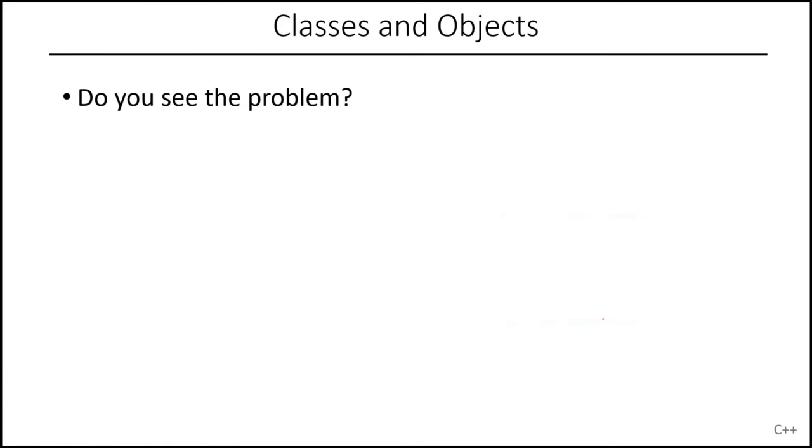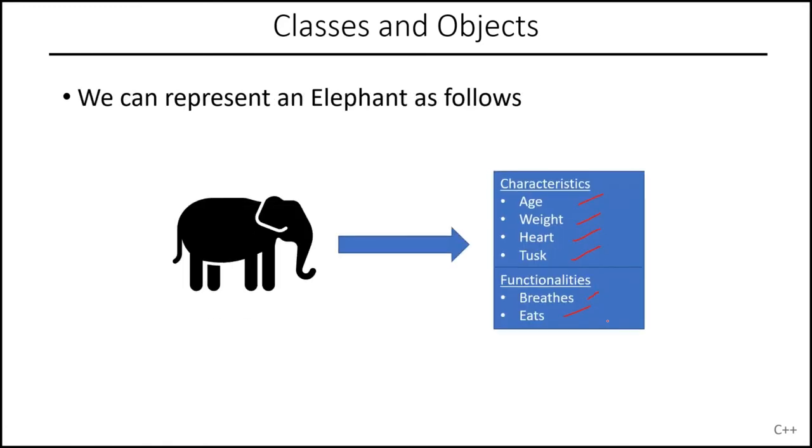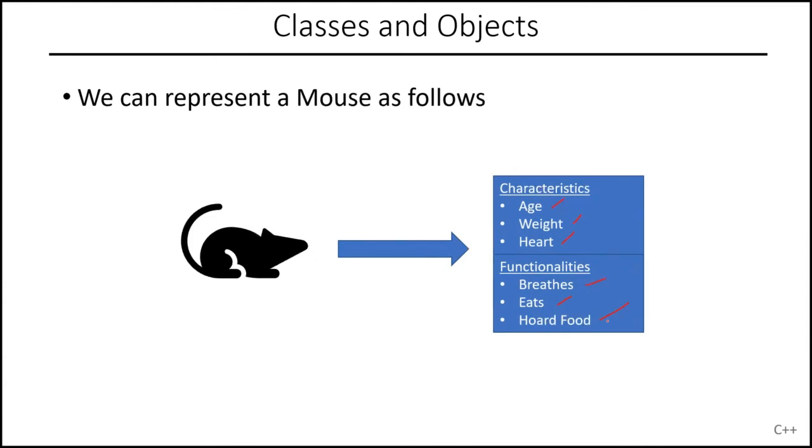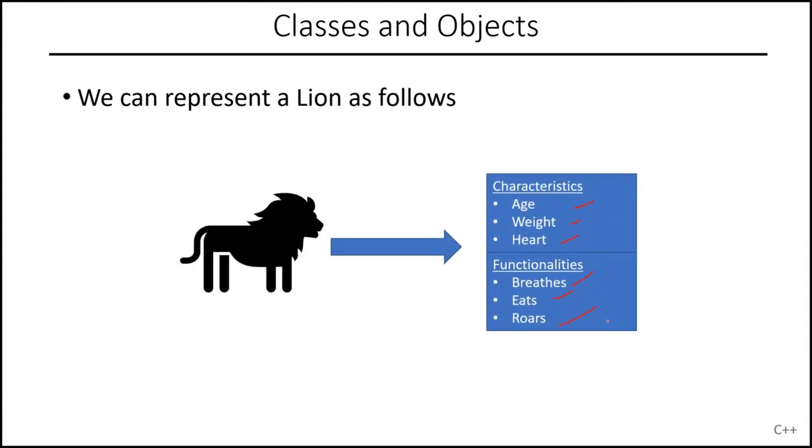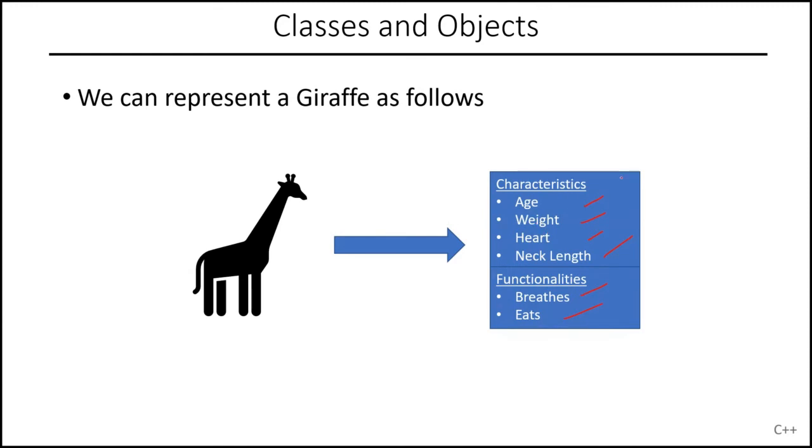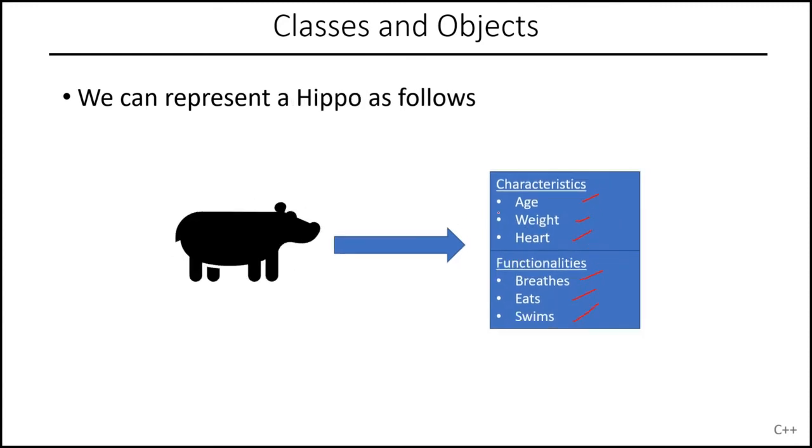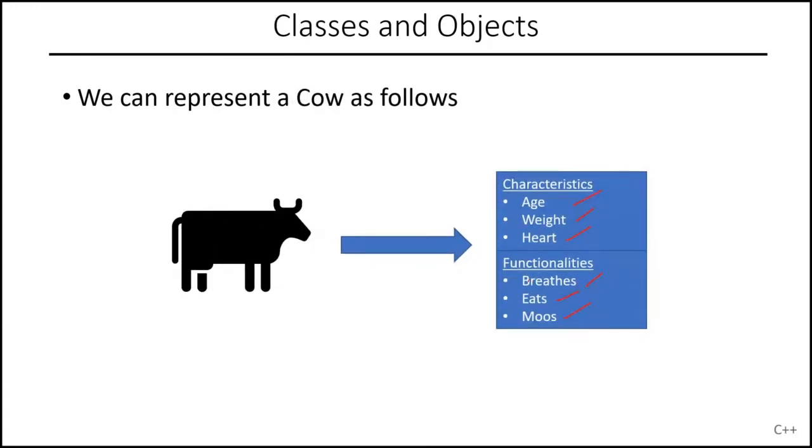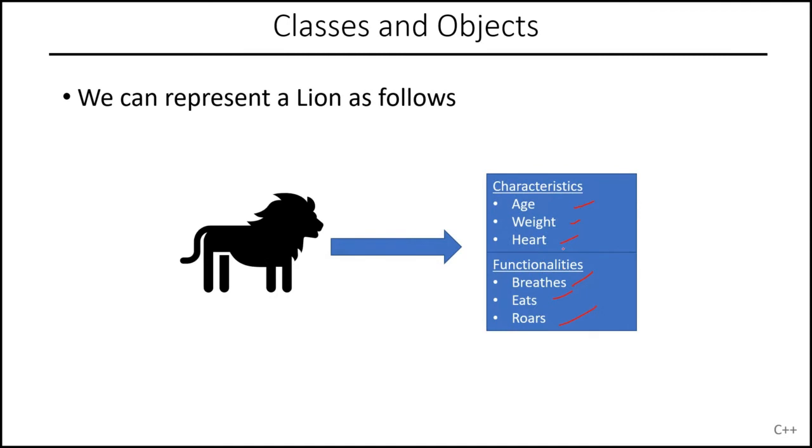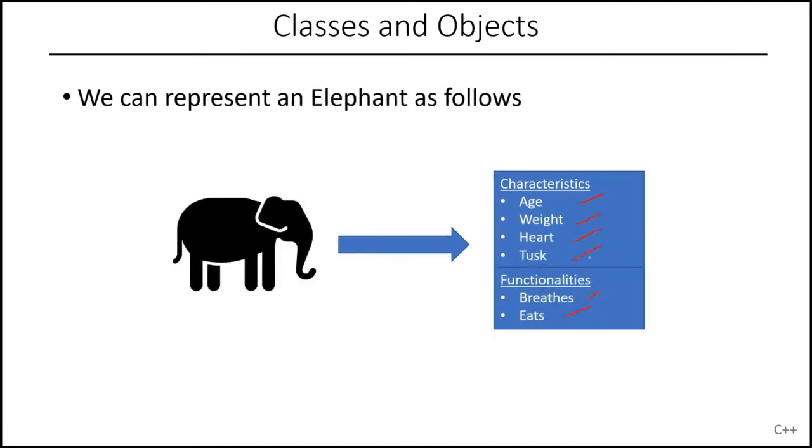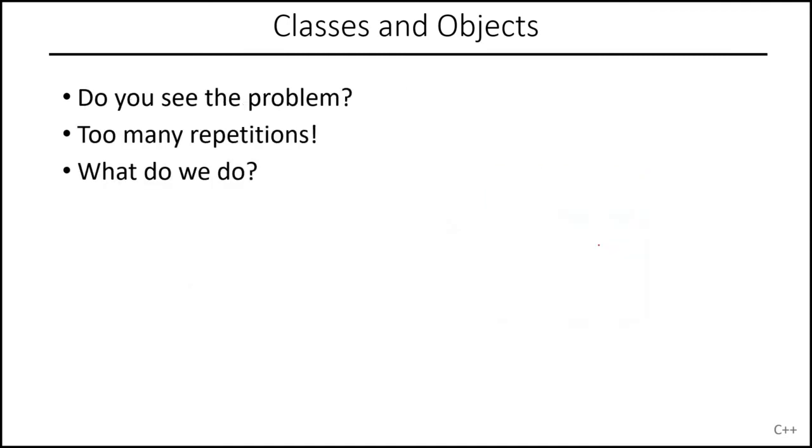Do you guys see the problem? What's so problematic about all of this? I mean, imagine we have to do this for 100 animals or all the animals in the world. You would have to write the age, the weight, the heart for every single one of them, and you would also have to specify the functionality that it breathes and it can eat. We are repeating this over and over again. So that is the problem.